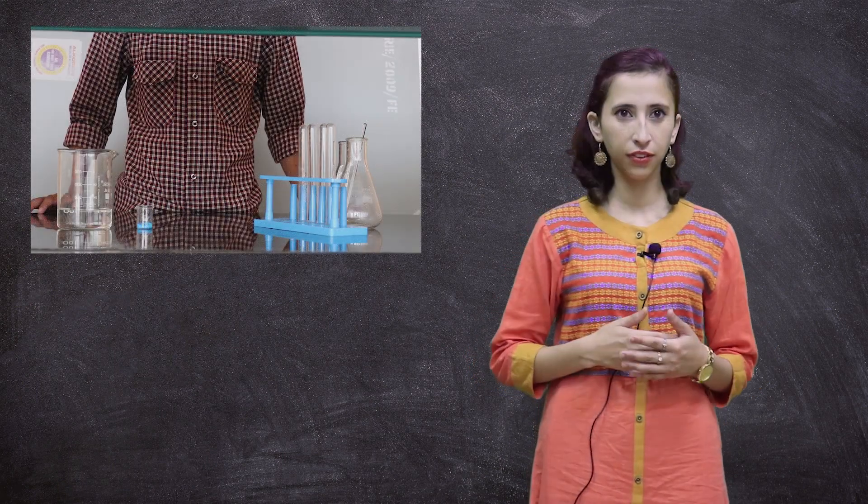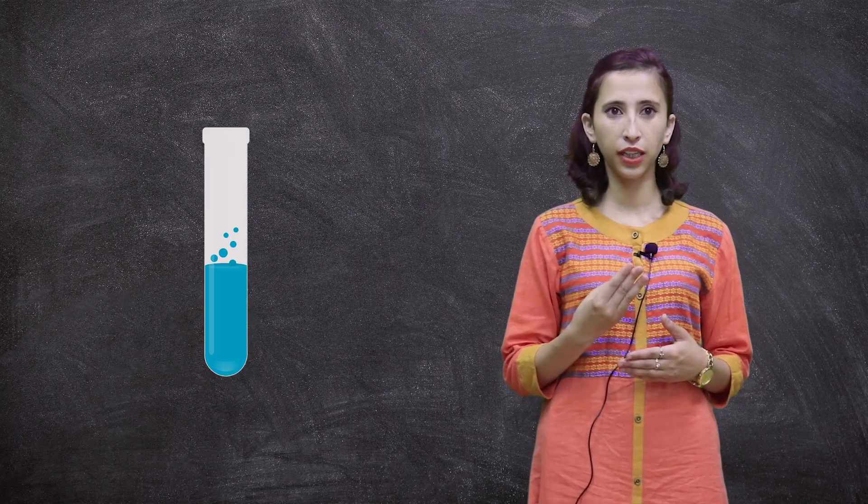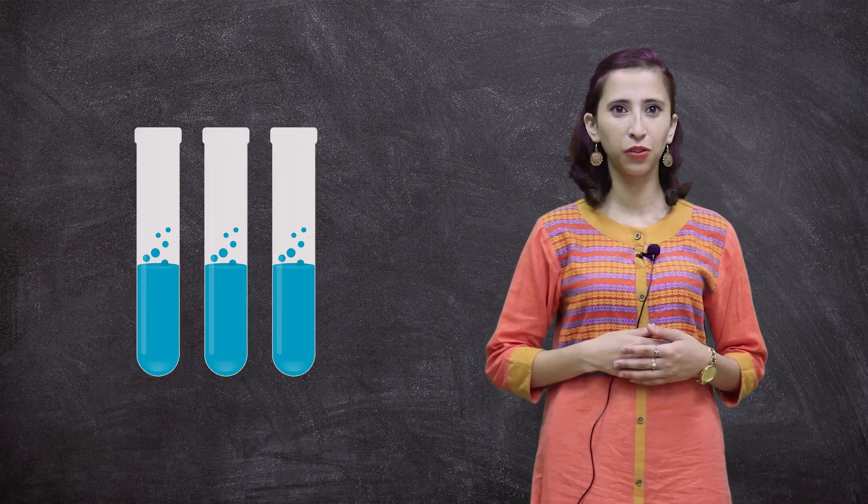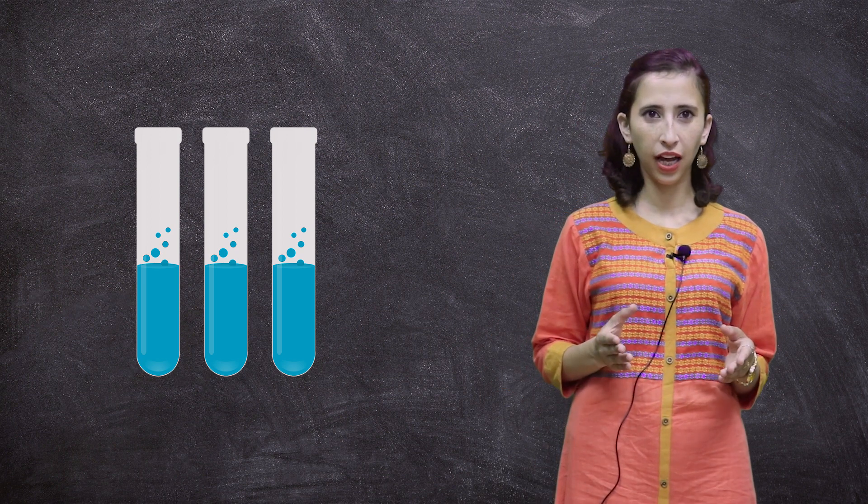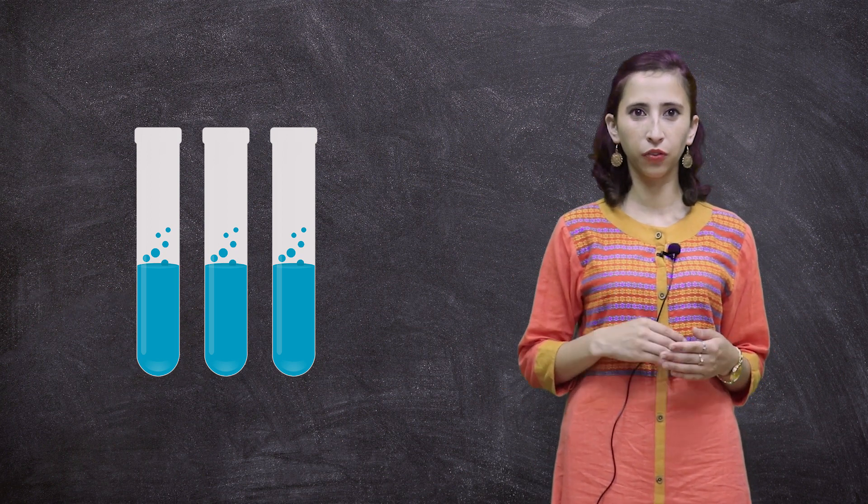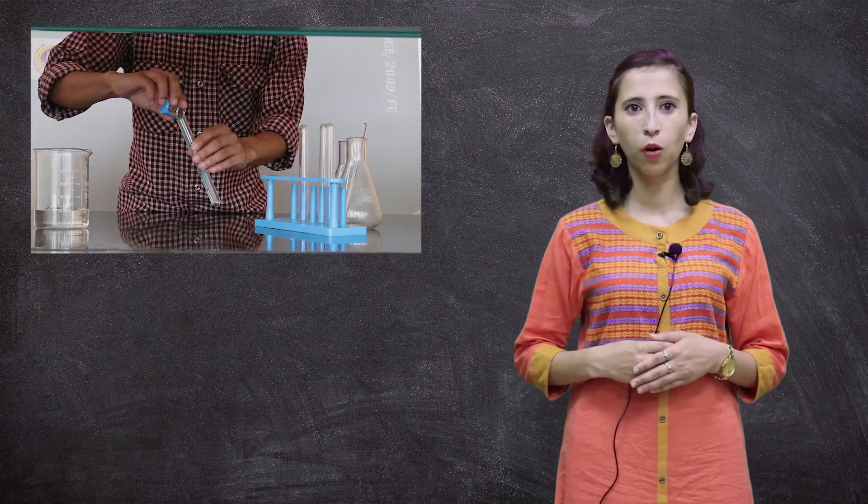In this next activity we will take three test tubes, each containing an equivalent amount of water. In each of these test tubes we will add one of these three ingredients: copper sulphate, wheat flour, and ink.